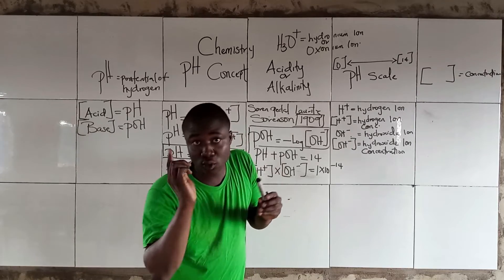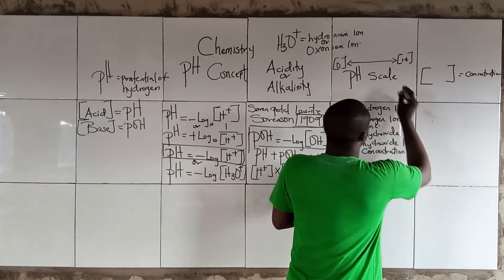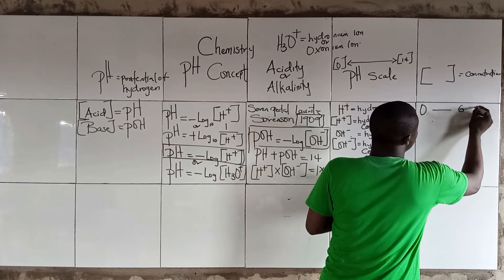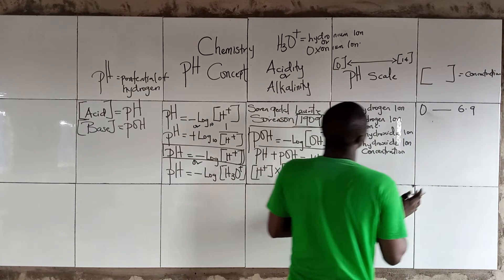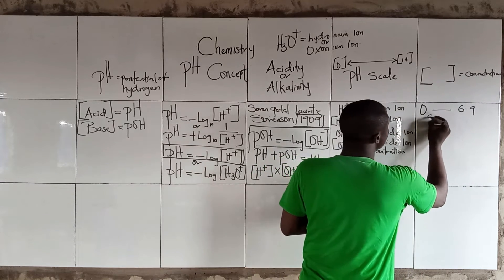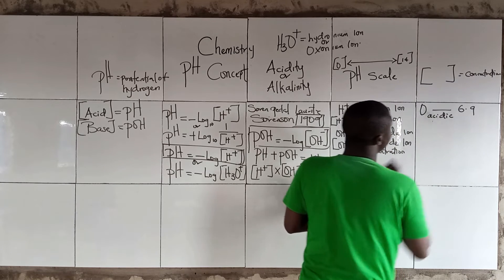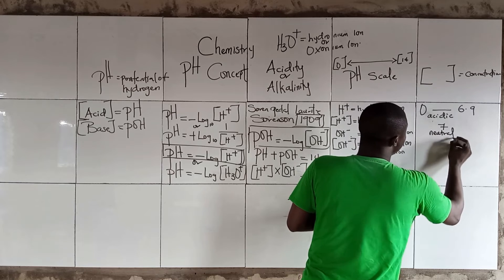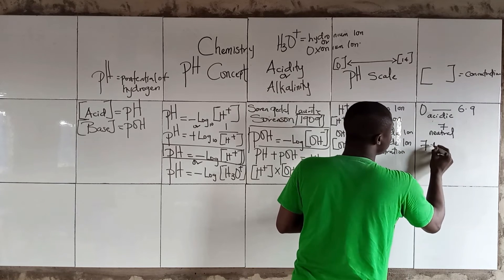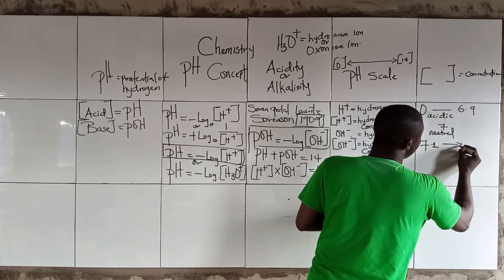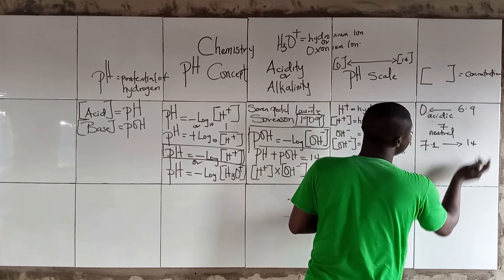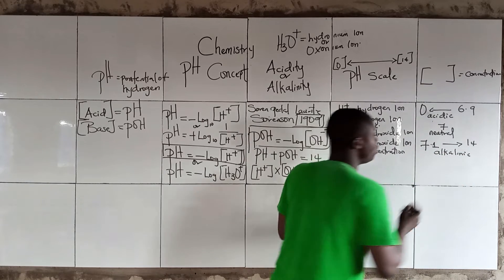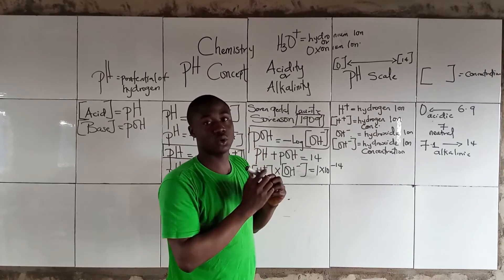On the pH scale, when the value is from 0 to 6.9, we say the solution is acidic. When it is exactly 7, it is neutral. When the value is from 7.1 to 14, the solution is alkaline, or basic, in nature.